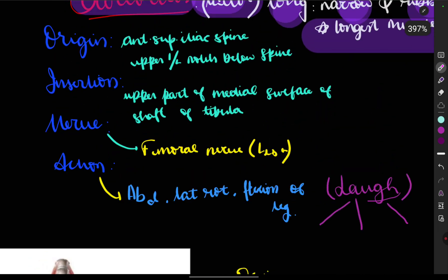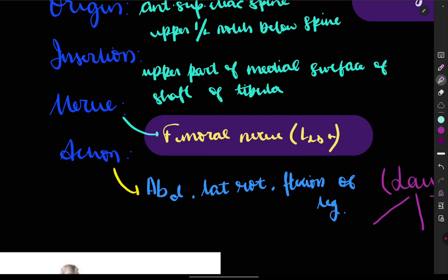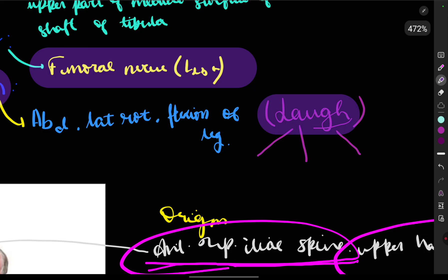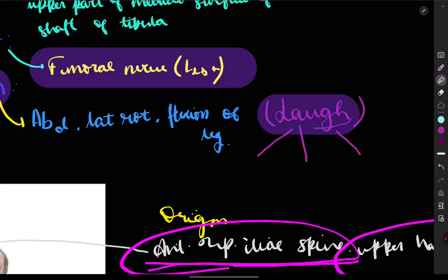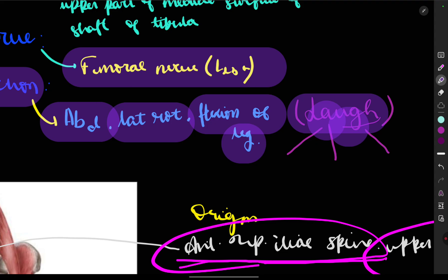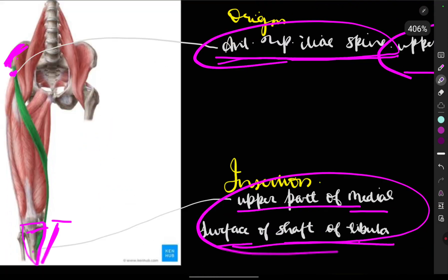The nerve supply is the femoral nerve, arising from the ventral rami of spinal nerves L2, L3, and L4 on the dorsal side. On the ventral side from L2, L3, and L4 it is the obturator nerve — do not confuse the two. The action of sartorius can be remembered with the mnemonic 'LAUGH': L for lateral rotation, A for abduction, U for... G for... H for flexion of the hip and leg. So sartorius action is LAUGH.